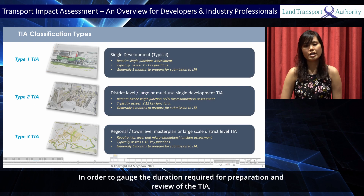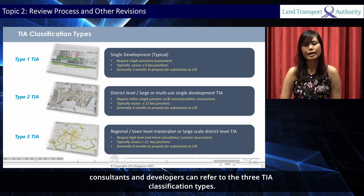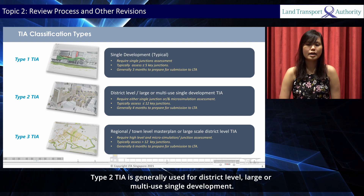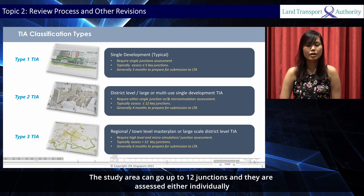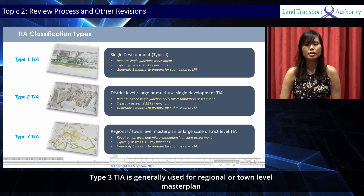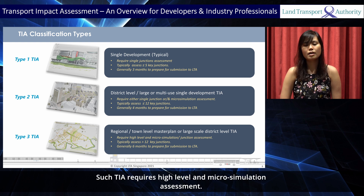To gauge the duration required for preparation and review of the TIA, consultants and developers can refer to the three TIA classification types. Type 1 TIA is generally used for single development where junctions, usually up to 5, are assessed individually. Type 2 TIA is generally used for district-level, large, or multi-use single development, with a study area of up to 12 junctions assessed individually or with microsimulation. Type 3 TIA is generally used for regional or town-level master plans with study areas usually beyond 12 junctions, requiring high-level and microsimulation assessment.